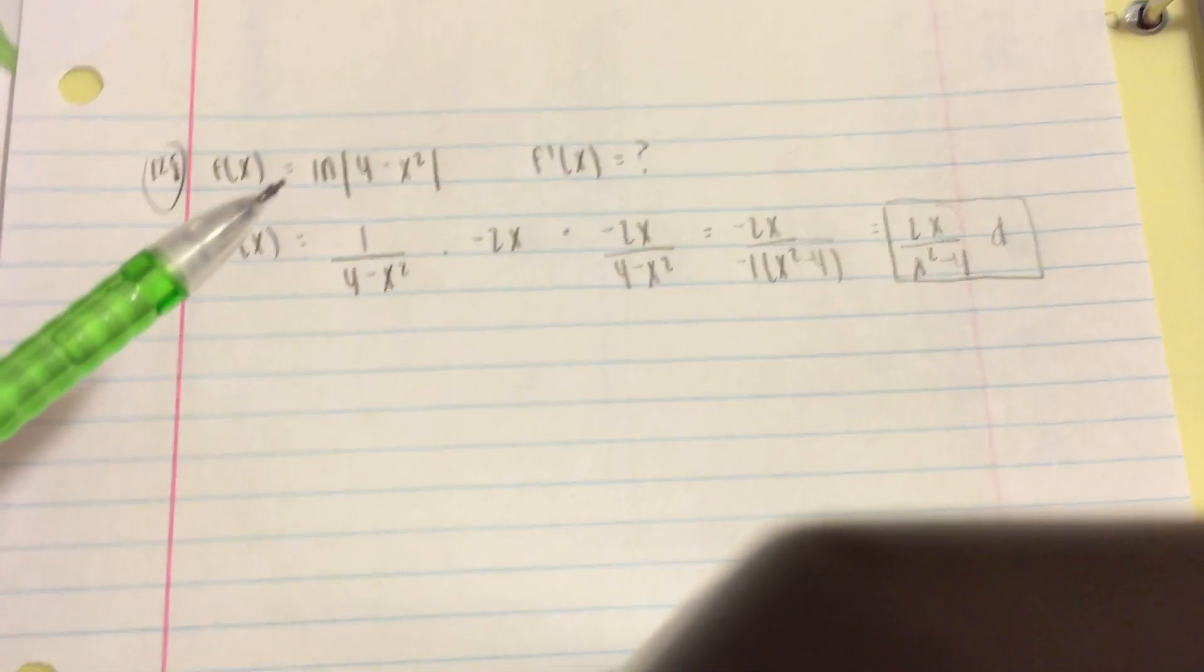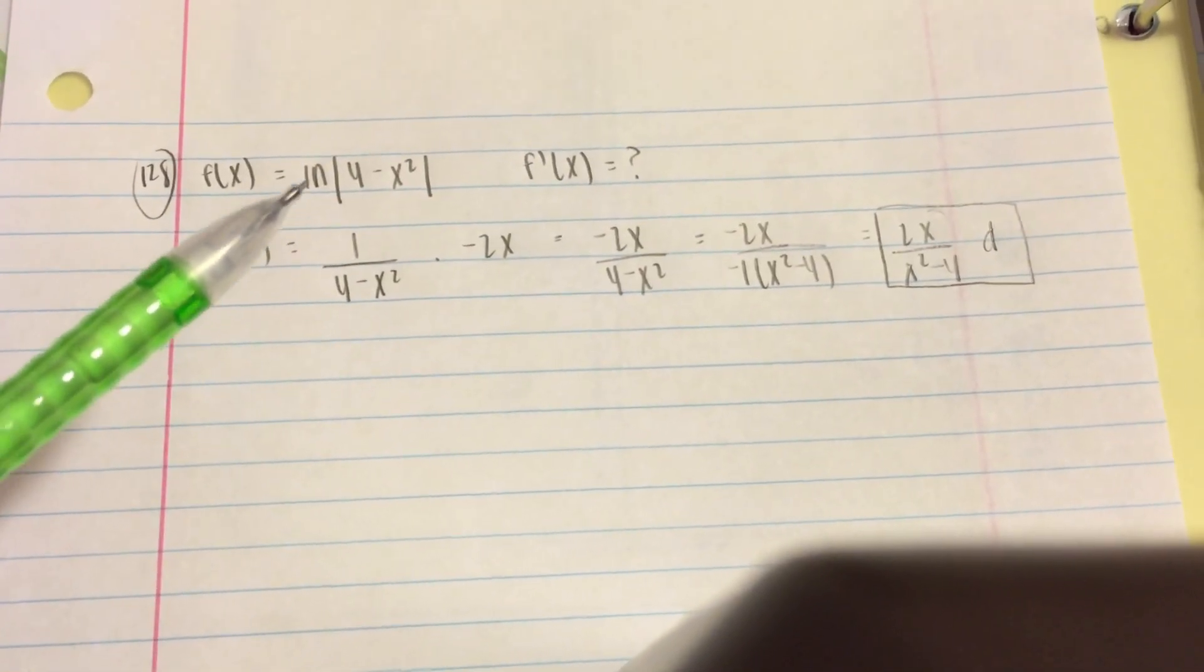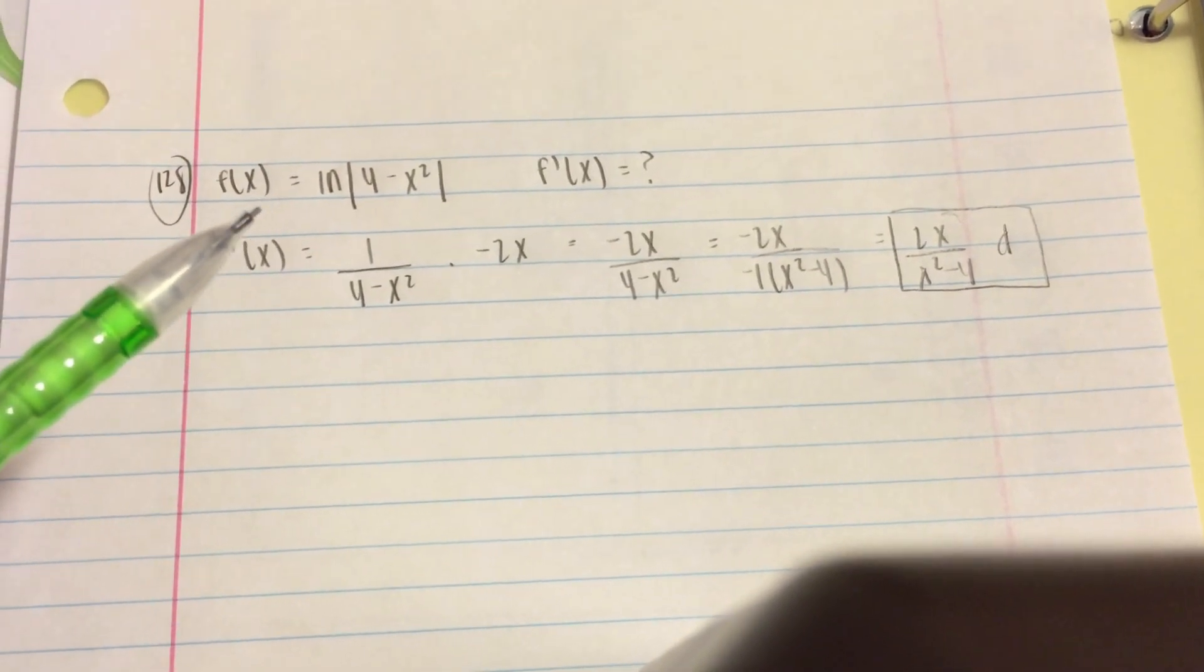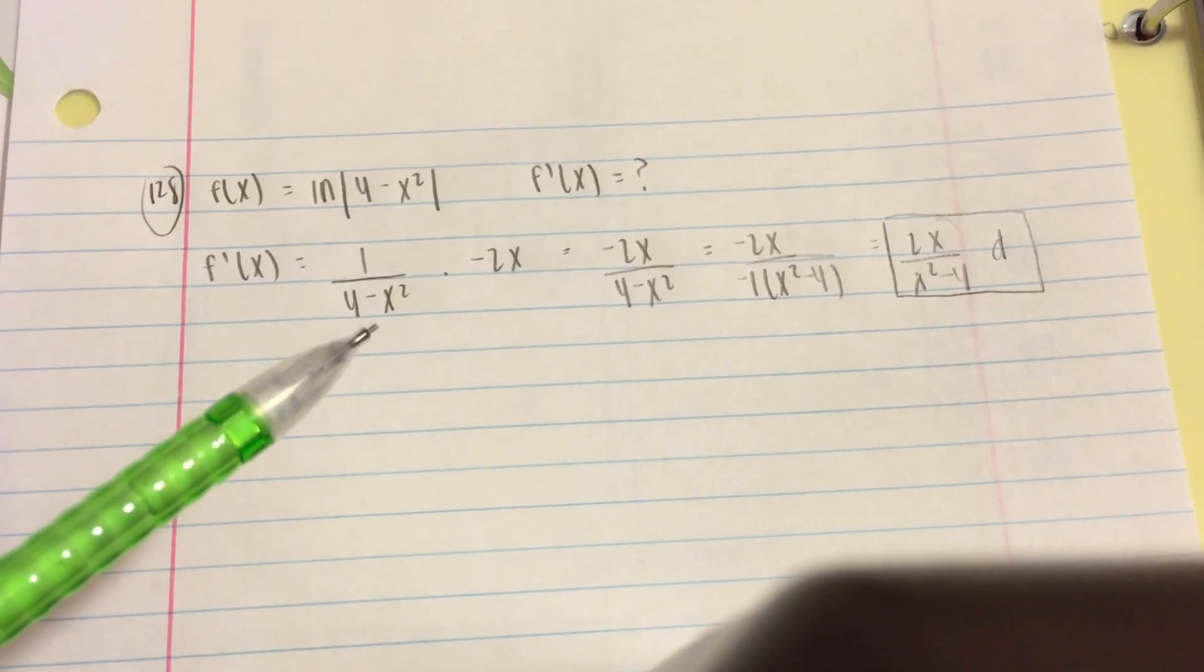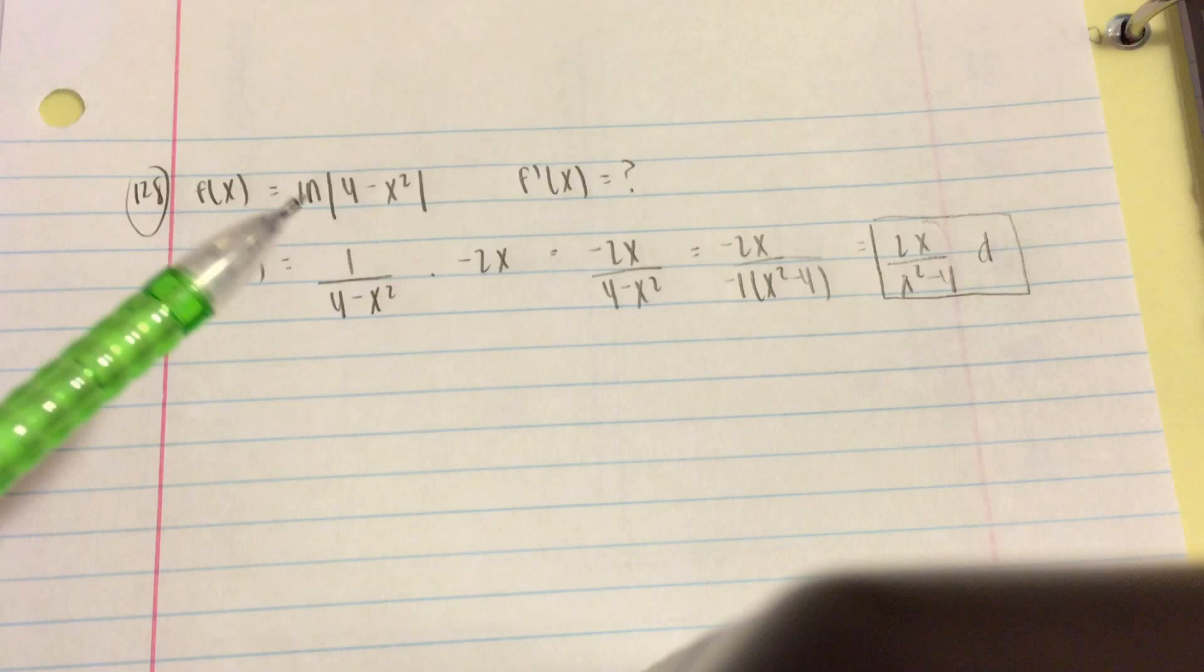To solve this, we have to use the chain rule. We first find the derivative of the outside function. The outside is ln, and the derivative of ln is 1/x. But for this problem, it's going to be 1/(4 - x²), times the derivative of the inside function.